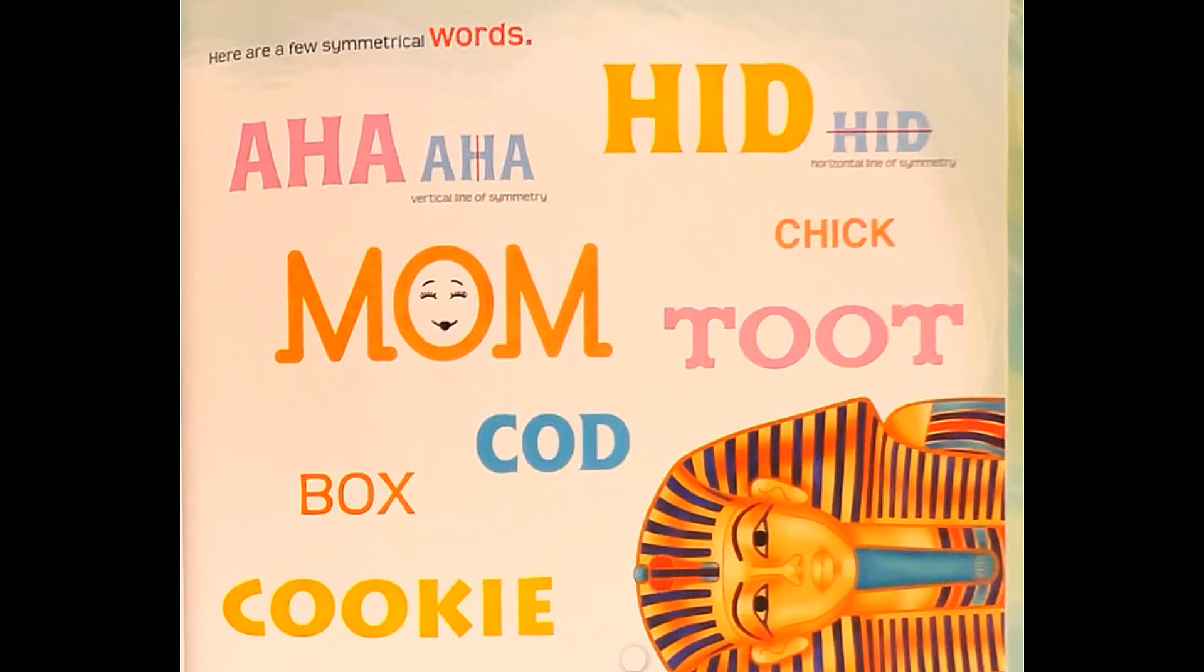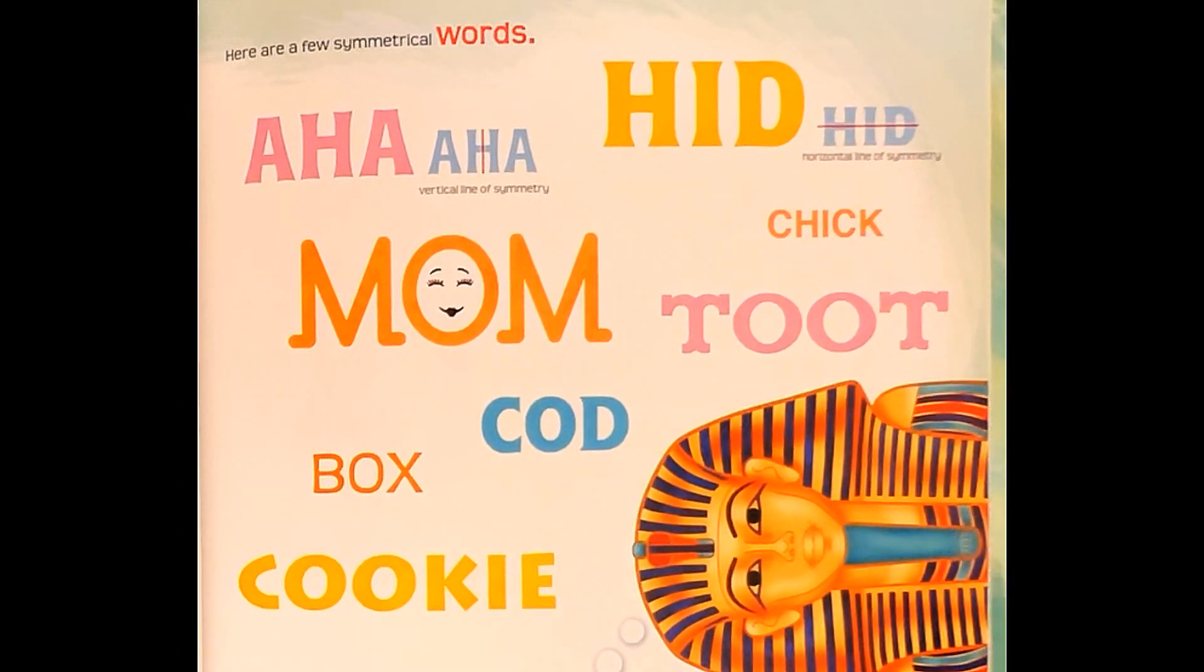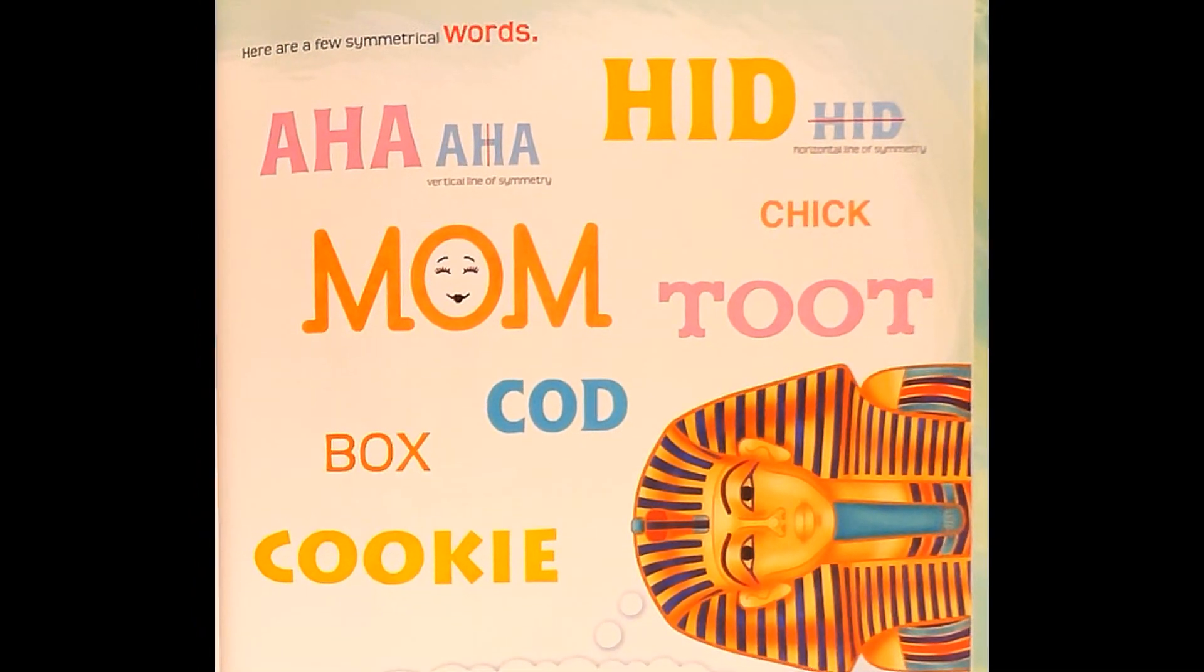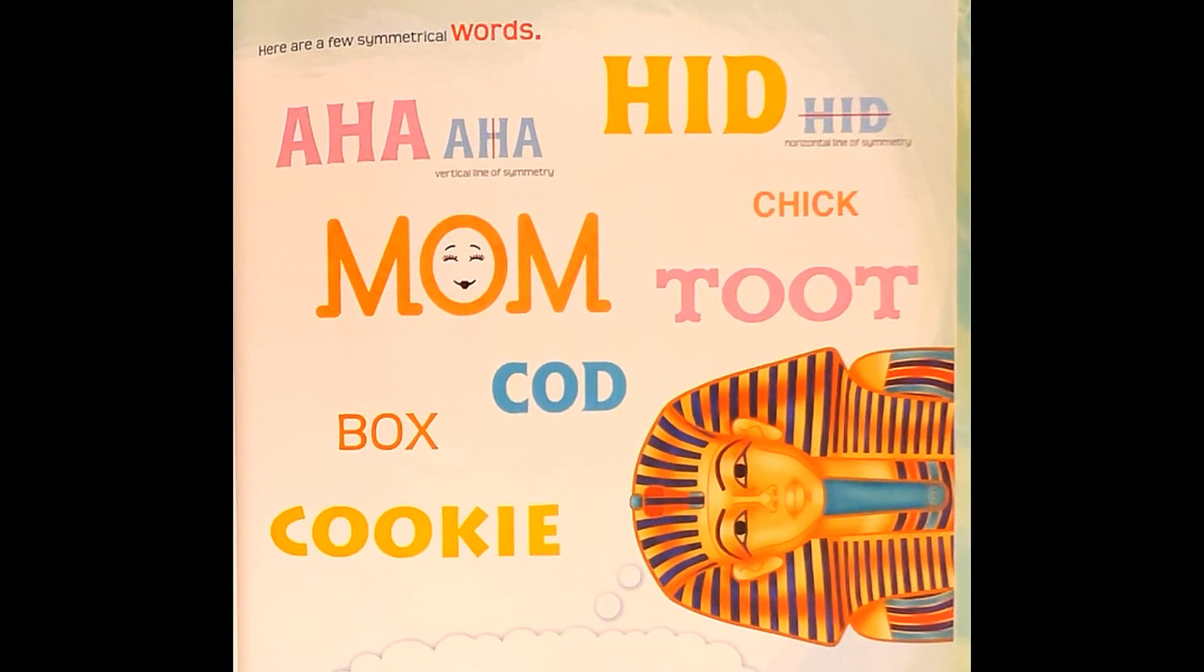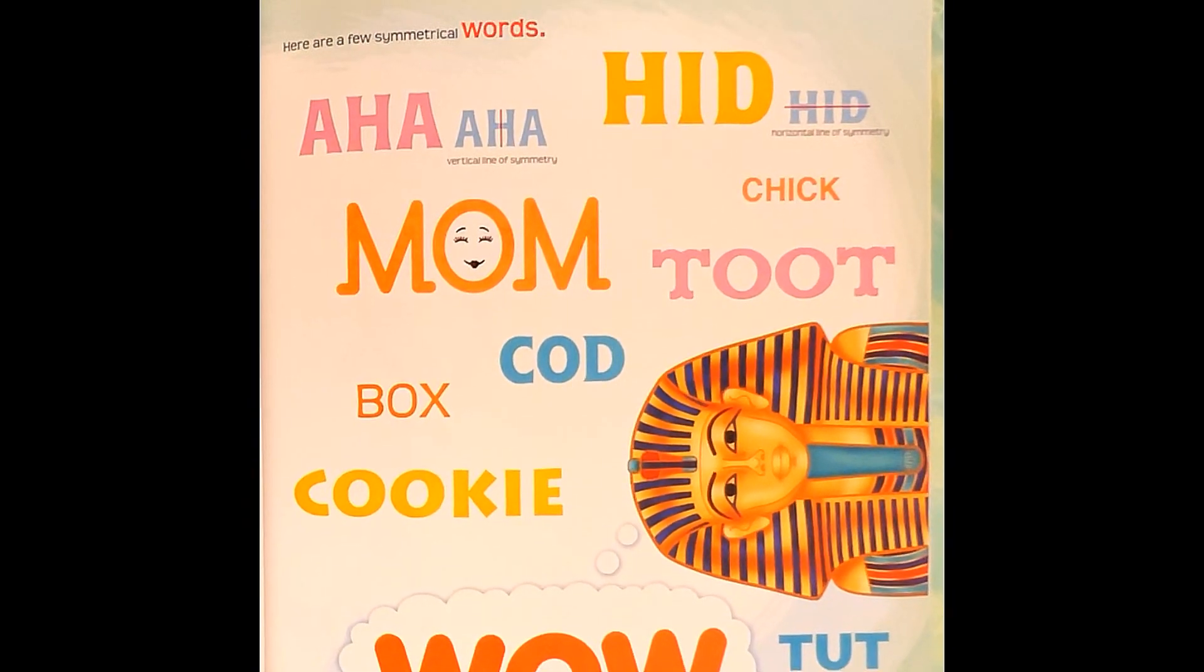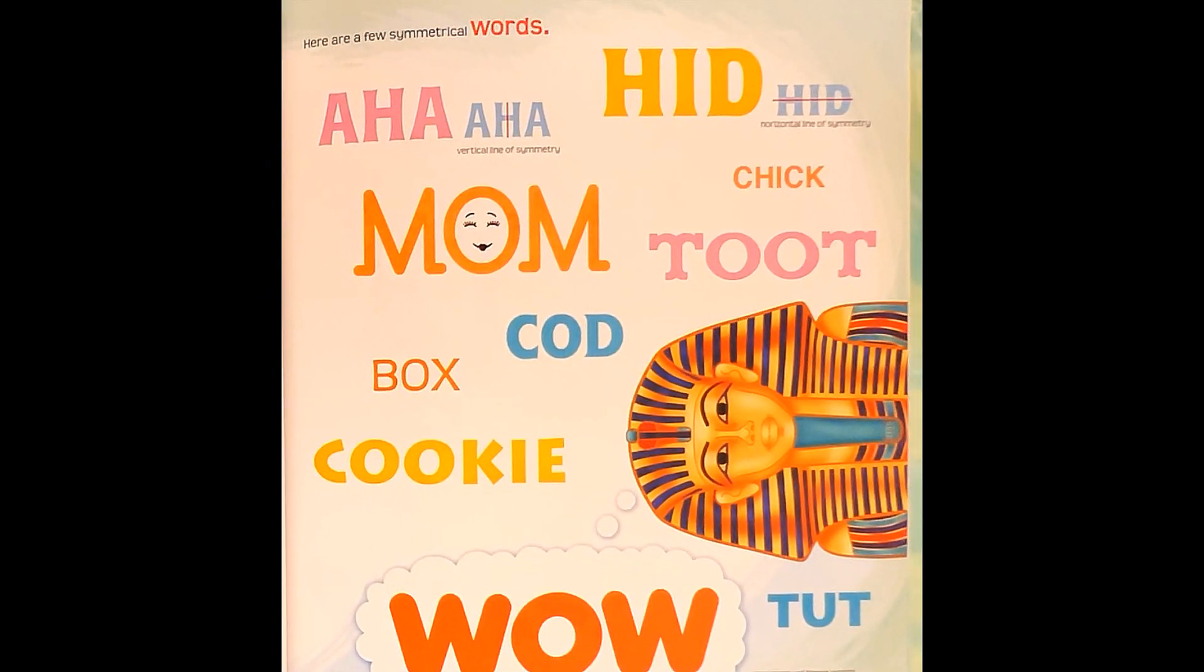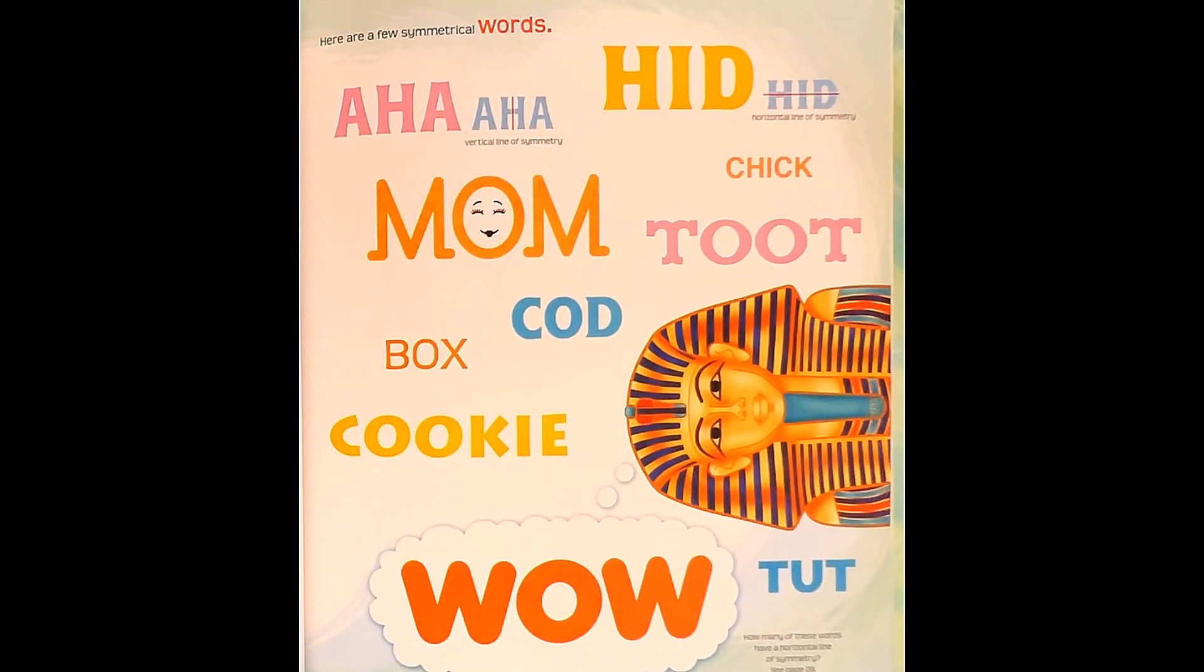Here are a few symmetrical words. Aha has a vertical line of symmetry. Hid, horizontal line of symmetry. Mom, chick, toot, cod, box, cookie, wow, and tut. How many of these words have a horizontal line of symmetry? See page 28.